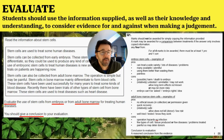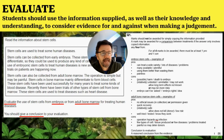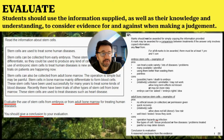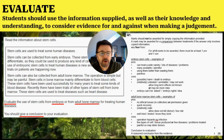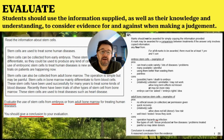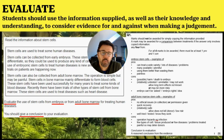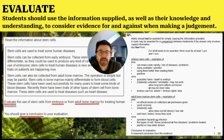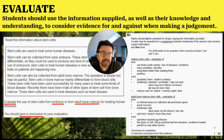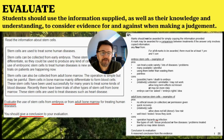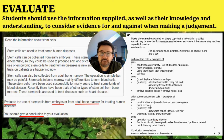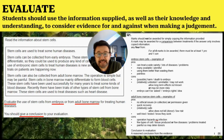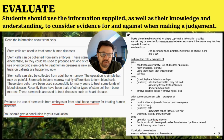A mark may be awarded for a comparison between treatments if the answer only involves copied information. To be awarded four marks, there must be at least one pro and one con. So answering this, I would give embryo stem cells one pro and one con, adult bone marrow stem cells one pro and one con, and then a conclusion. The conclusion could be anything — for example, you agree or disagree about using embryonic stem cells in research or to cure diseases, and then give a reason why. Any reason is fine, as long as it's reasoned.